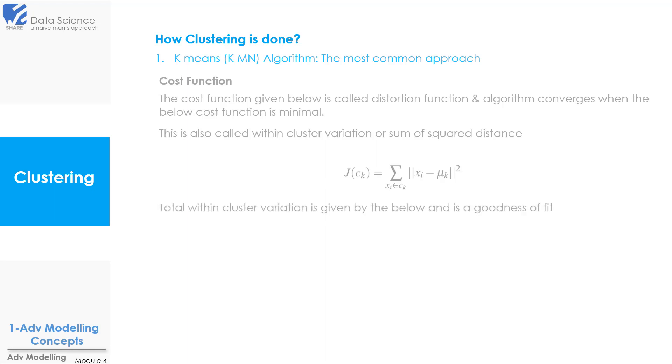Now total within cluster variation is given by the below formula, and this is called as goodness of fit, which means we will have to minimize it to get the best model. To get the best model we not only have to minimize the within cluster variation of one cluster but for all the clusters. Hence we use total within cluster variation.